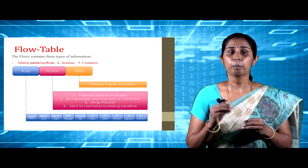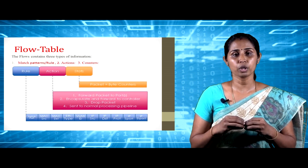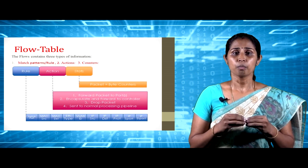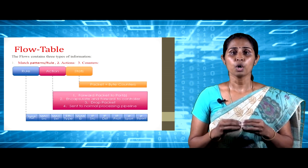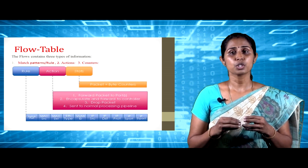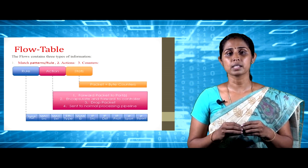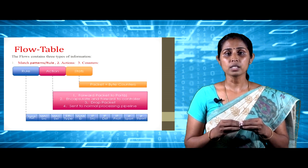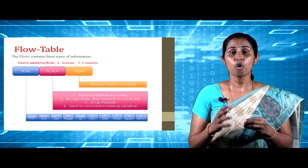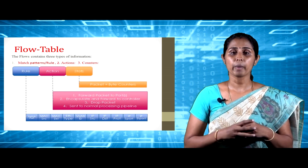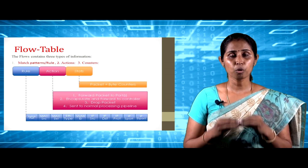The actions specified in the action field of the rule are applied to every packet of the corresponding flow. The most common actions are forwarding, dropping, or modifying the packets. The counters are used to keep track of how many packets are matched with the flow.